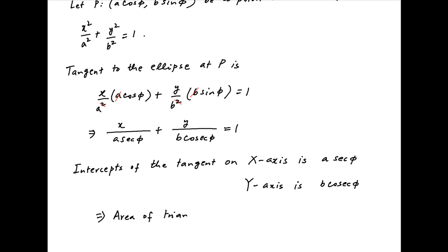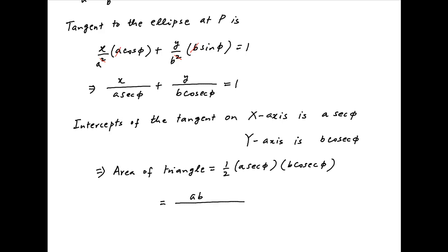Equal to half of the base which is a sec phi times the height of the triangle which is b cosec phi, and this is equal to ab upon 2 times sin phi cos phi, which simplifies to ab upon sin 2 phi.